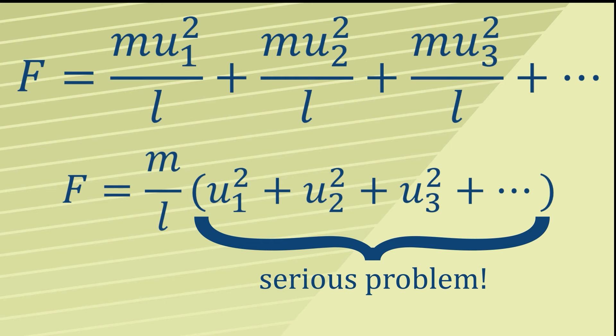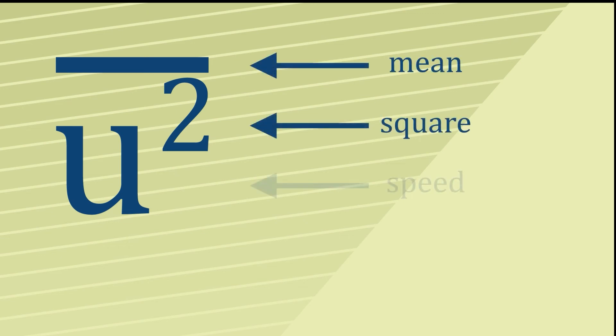Well, despite this fairly serious sounding problem, all is not lost, and to help us we will introduce something called the mean square speed. As you can see, this is written U for speed, square for square, with a bar over the top to indicate that it's the mean.